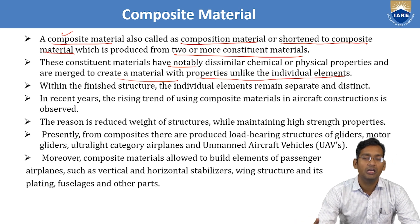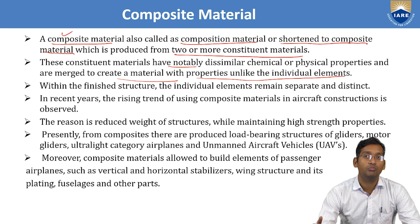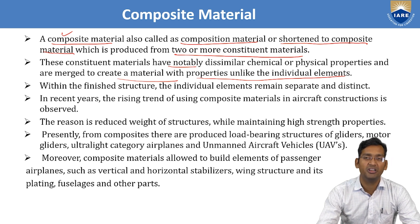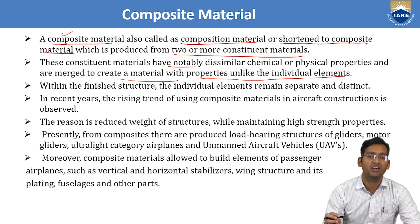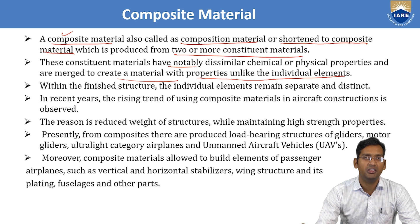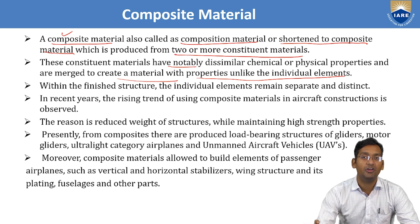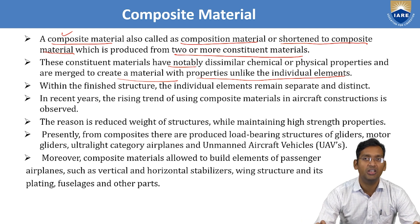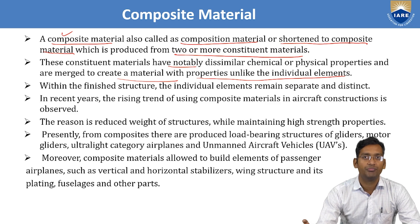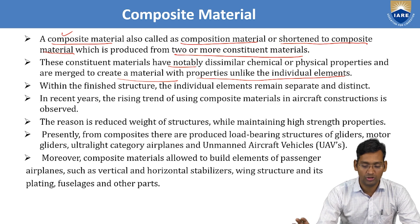After merging, the resulting material should have properties totally different from all individual elements. It should not retain the properties of the first, second, or third material. A totally new property should emerge — only then can we call it a composite material.